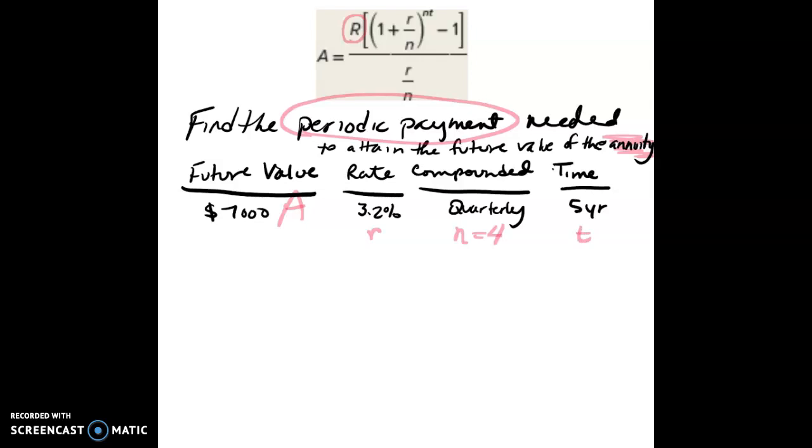So now I've got all my variables, except the one that I'm looking for. I'm going to plug them in. So I'm going to say 7,000 for A is equal to R times 1 plus R over N, raised to the N times T, minus 1, this whole thing over R divided by N.